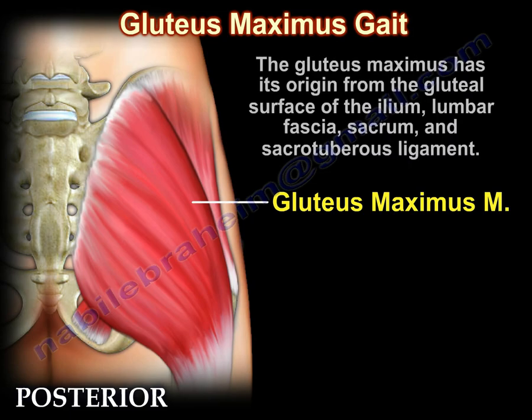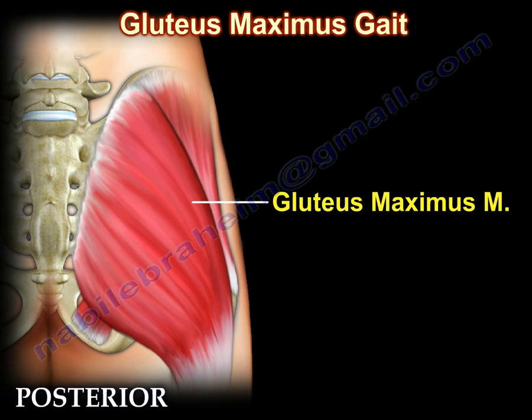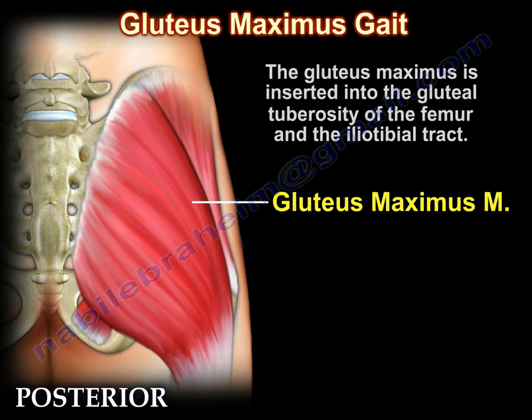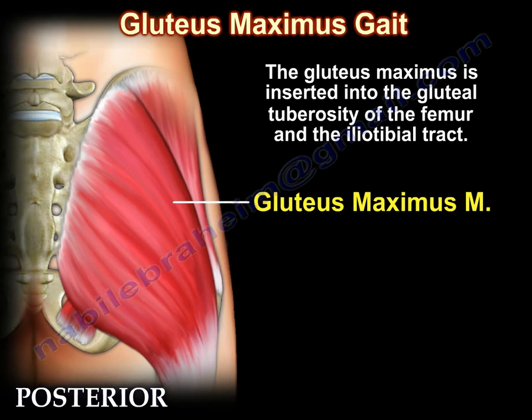The gluteus maximus has its origin from the gluteal surface of the ilium, lumbar fascia, sacrum, and sacrotuberous ligament. The gluteus maximus is inserted into the gluteal tuberosity of the femur and the iliotibial tract.